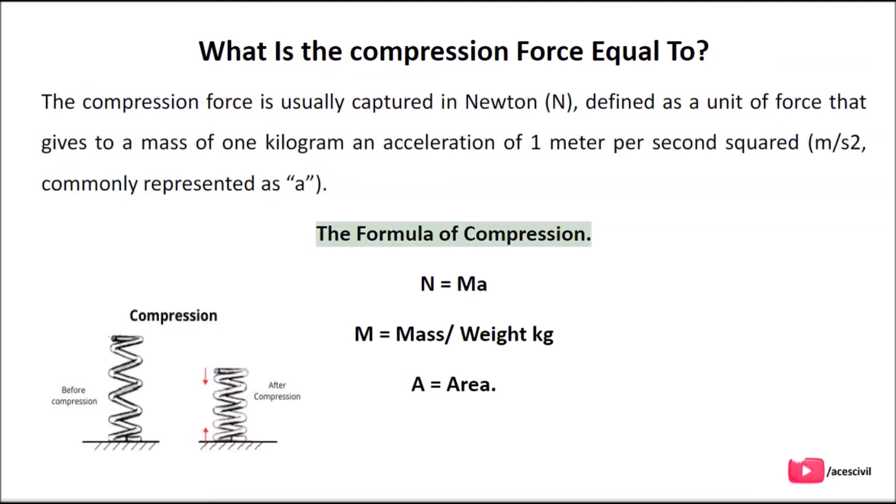The formula of compression: N = ma, where m equals mass or weight in kilograms, and A equals area.